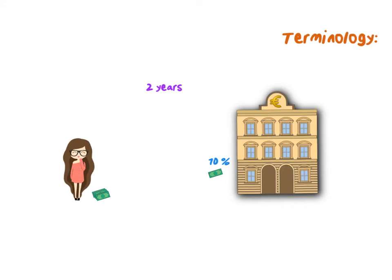Let's consider some terminology that you will need for this. First of all, we start with the investment period. The investment period for this is two years. The symbol used for this is N. You can think of it as the number of years — and sometimes also number of months or number of quarters — but most of the time it's number of years.